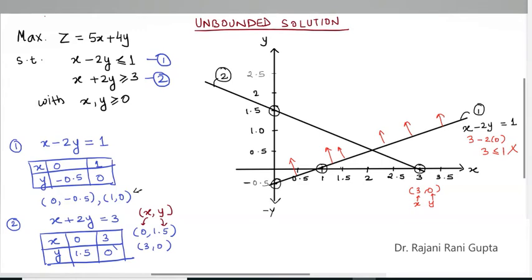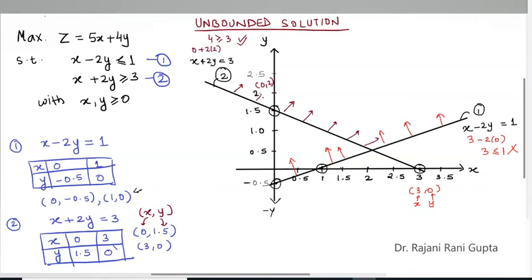Constraint 2 states x + 2y ≥ 3. We test the point (0, 2): substituting gives 0 + 4 = 4, and 4 ≥ 3 is true. Since this point satisfies the constraint, we move towards it — the feasible region is in the upward direction from that line as well.